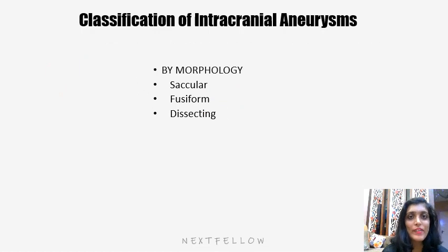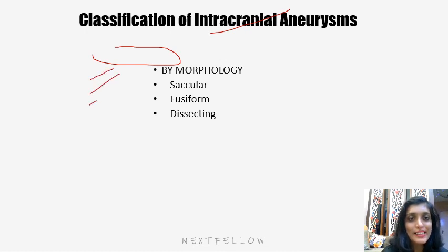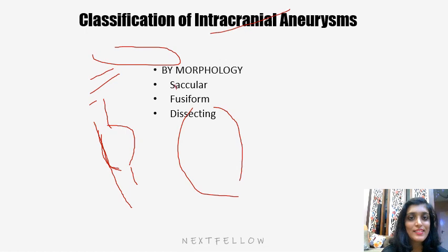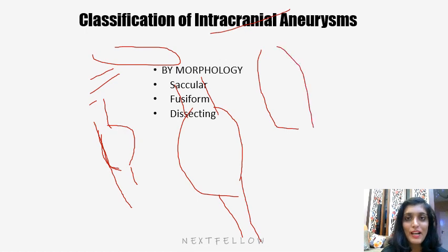Classification of intracranial aneurysm by morphology: there are three types — saccular, fusiform, and dissecting. Saccular aneurysm is a pouch-like outpouching of the artery. Fusiform is a diffuse dilation of the artery wall. Dissecting means blood flows through the wall of the aneurysm, similar to what happens in aortic dissection.